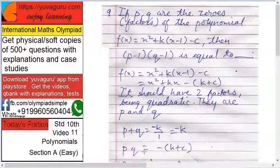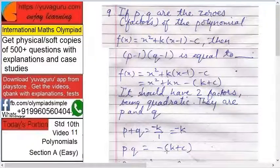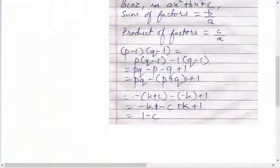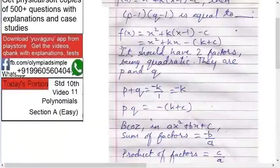So you have got these two things now. p plus q equals to minus k. pq equals to minus (k plus c). Now solve (p-1)(q-1) because that is required.